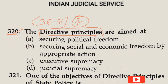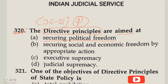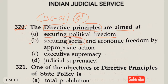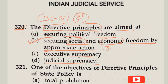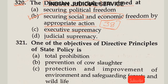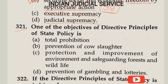Question Number 320: Directive Principles are aimed at — Option A: securing political freedom; Option B: securing social and economic freedom by appropriate action; Option C: executive supremacy; Option D: judicial supremacy. The answer is clearly Option B — securing social and economic freedom by appropriate action. This is related to Article 38, which deals with the state working for the welfare of society.